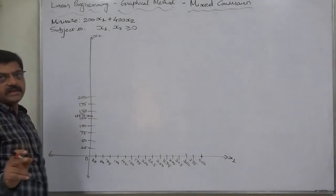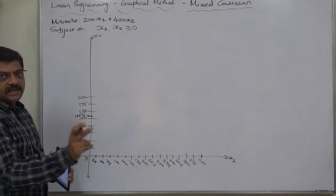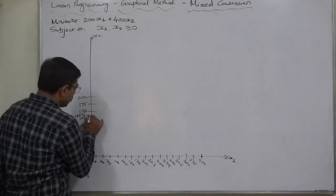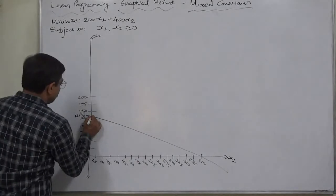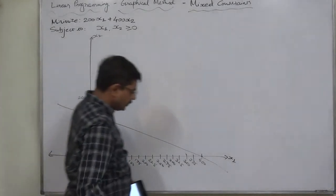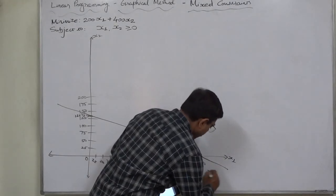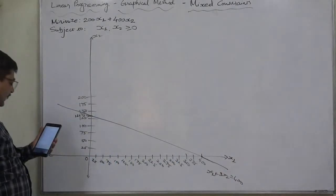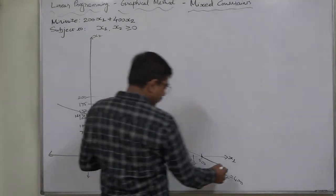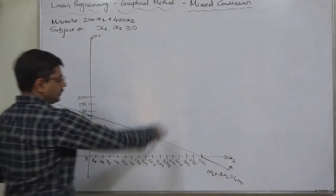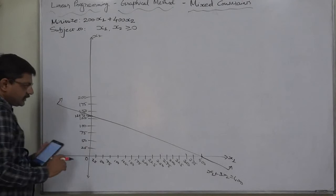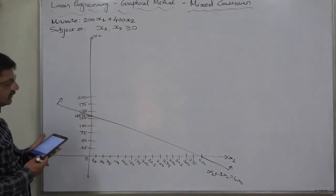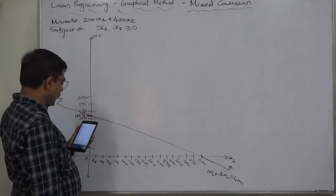Take the exact point of the value 133 and one-third, then draw a straight line. I always advise using a ruler or scale of 12 inches — never use a scale of 6 inches to draw a graph. This straight line represents the equation x1 plus 3x2 equals 400. Since x1 greater than 400 and x2 greater than 133 and one-third, the shaded region will be above the line.